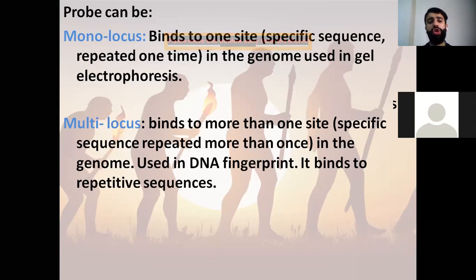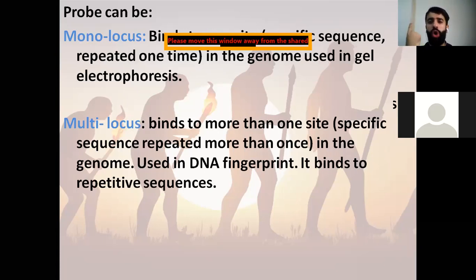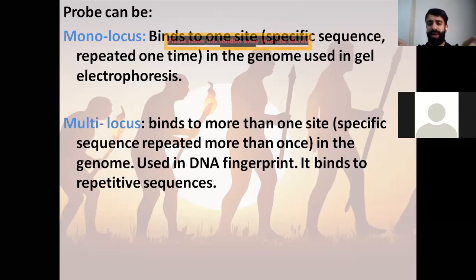The probe can be either monolocus or multilocus. The meaning of mono is one; multi means more than one. Locus is a position, and the plural is loci. A monolocus probe binds to a specific sequence at one site — it's repeated only one time in the genome and is used in gel electrophoresis. Whereas a multilocus probe binds to more than one site — this sequence may be repeated more than once in the genome, and it may be used in DNA fingerprinting, binding to many repetitive sequences.